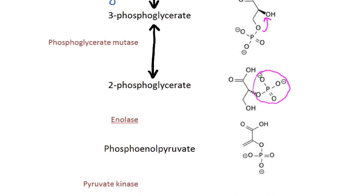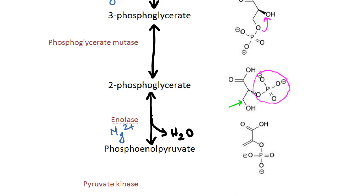The next step is going from 2-phosphoglycerate to phosphoenolpyruvate. This is a dehydration reaction which is carried out by enolase, and magnesium is a cofactor in this reaction. Here you can see that a carbon double bond is formed.